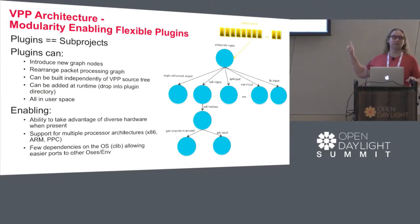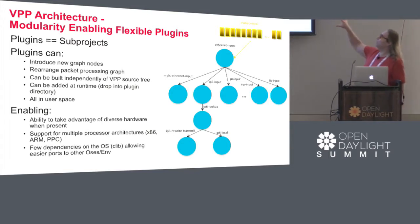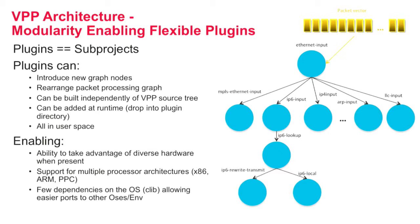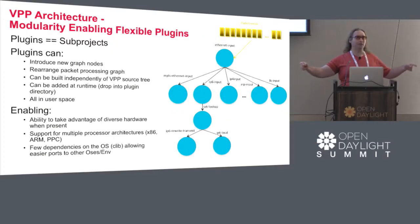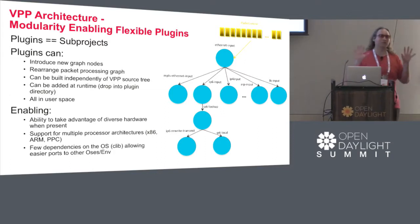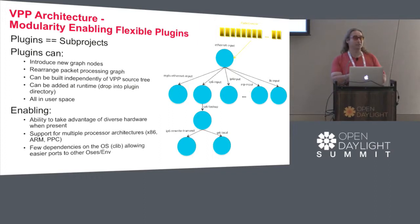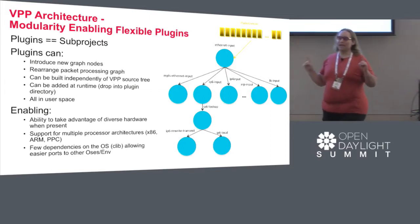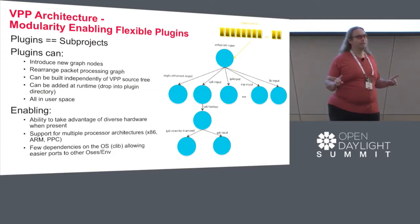This is the basic VPP architecture — the slide we talk about the most. At its heart, VPP is a packet processing graph. You can see these are real graph nodes — trimmed down a lot, because there are about 150 of them in actual VPP. The first bit of magic around performance: rather than taking the first packet and running it through the entire graph, then the second packet through the entire graph, we take a vector of packets — as many packets as we can get from the network I/O layer — and run them through the first node. By working on a vector of packets, you can amortize the fixed costs of processing across the entire vector.